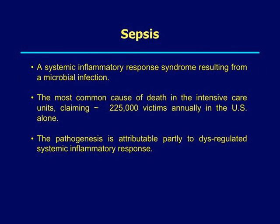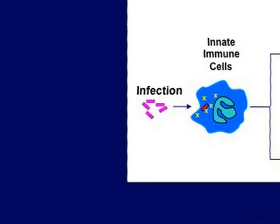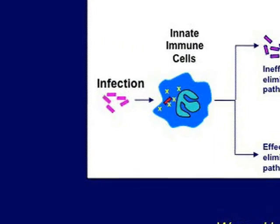I do not want to go through too much detail about what sepsis is. Basically, it's a systemic inflammatory response syndrome resulting from microbial infection. It's actually a very important clinical problem — it still kills more than 200,000 people a year in the U.S. alone. The pathogenesis of sepsis is very complex, but it's at least partly due to dysregulated inflammatory responses. Immune cells play a very important role in protection against infection.